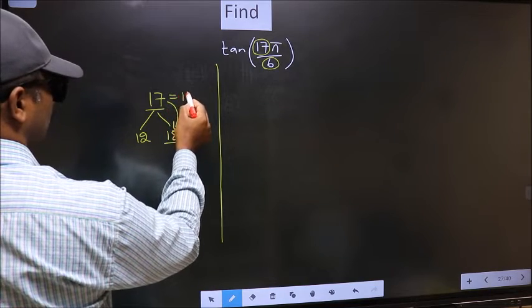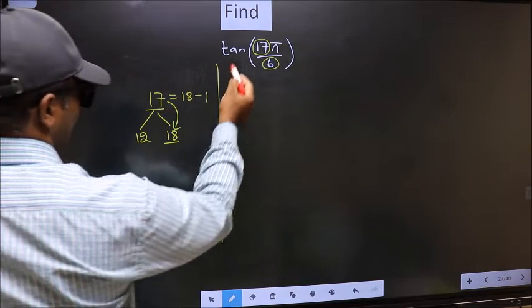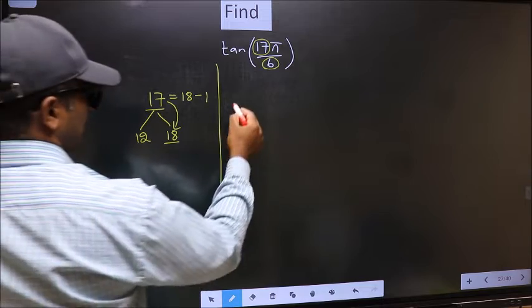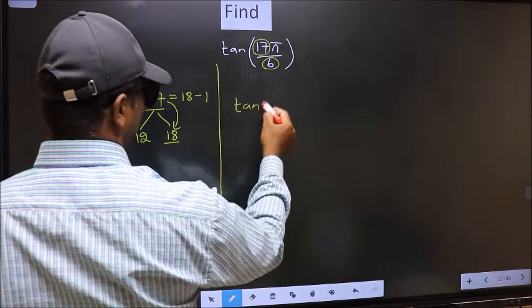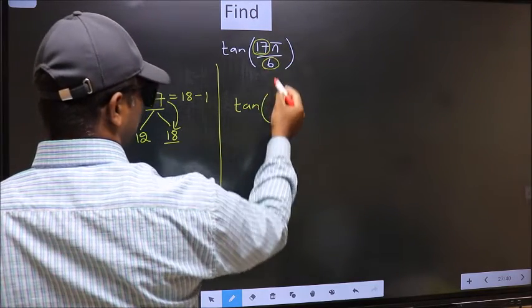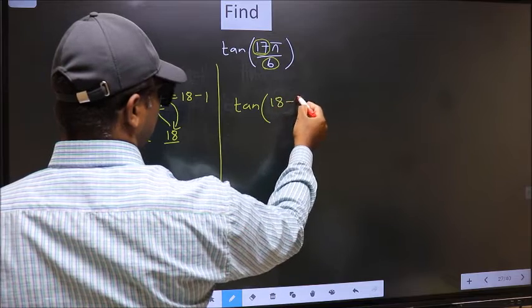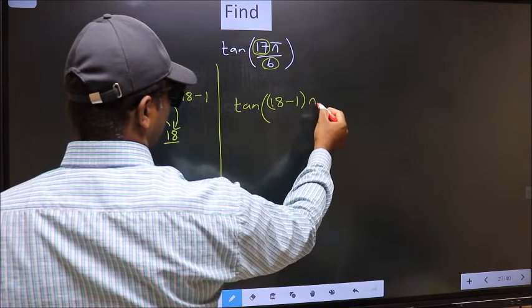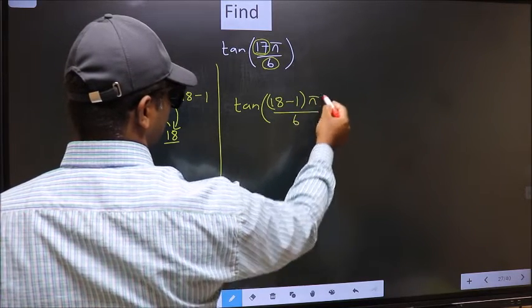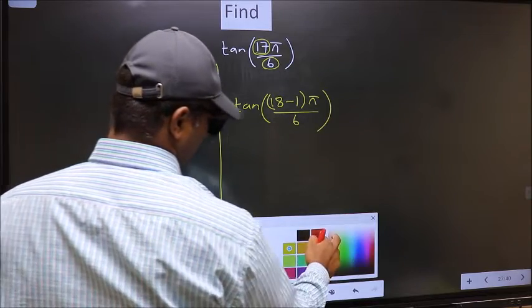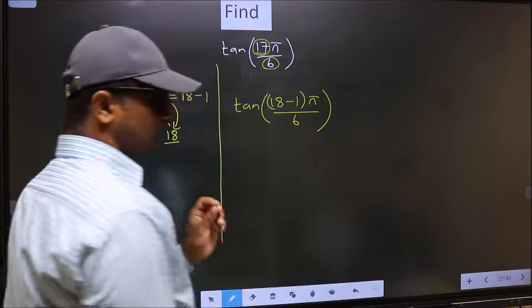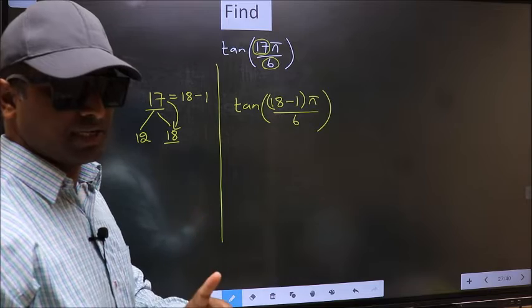So 17 should be written as 18 minus 1. So 1π by 6. This is your step 1.